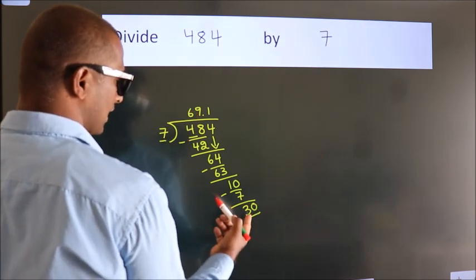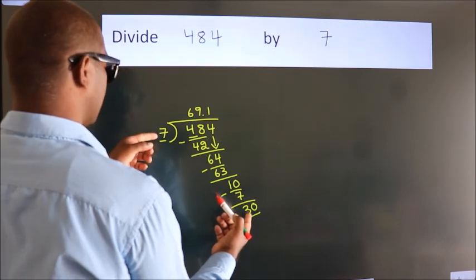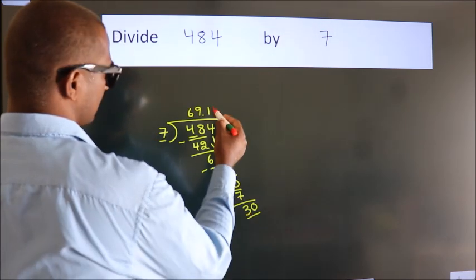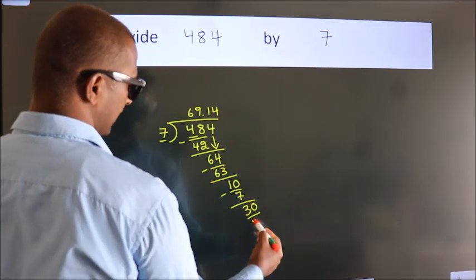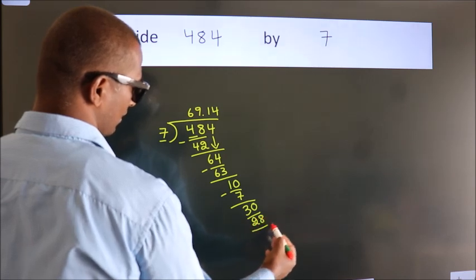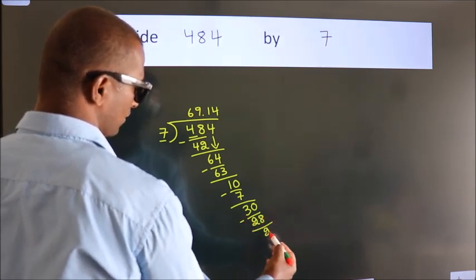So 30. A number close to 30 in 7 table is 7, 4, 28. Now, we subtract. We get 2.